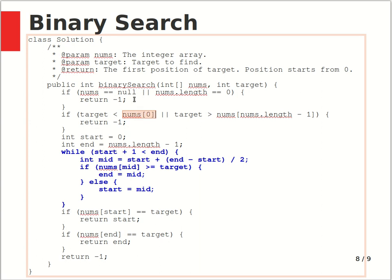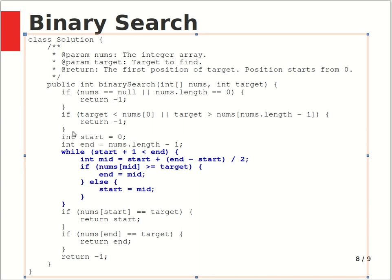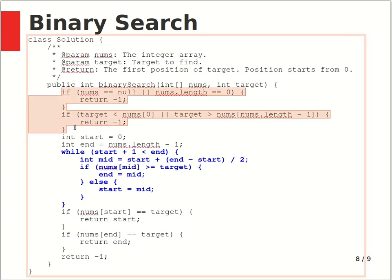Because the array is sorted, if the target is smaller than the first number of the array (which is the smallest element), or if the target is larger than the last element, you also return minus one immediately — you know the target cannot be inside this array, so you don't need to do any search. If neither condition applies, you proceed to actually search inside the array.